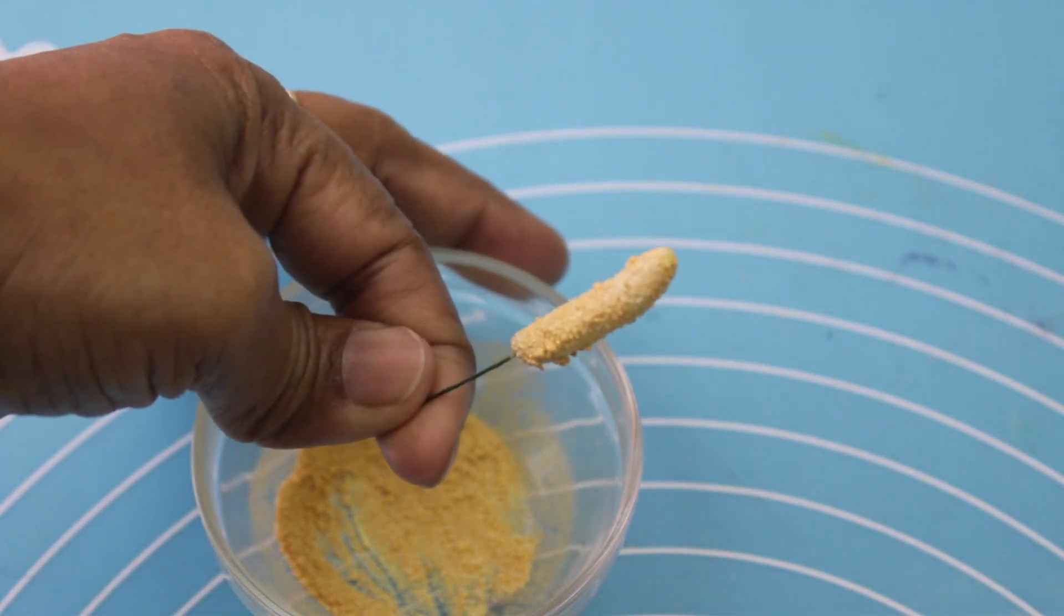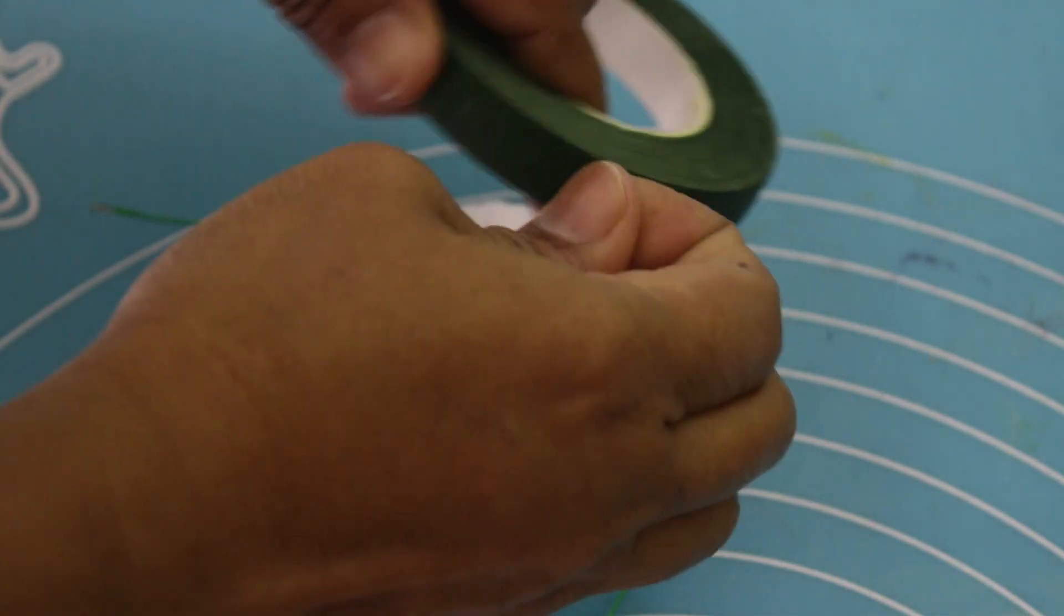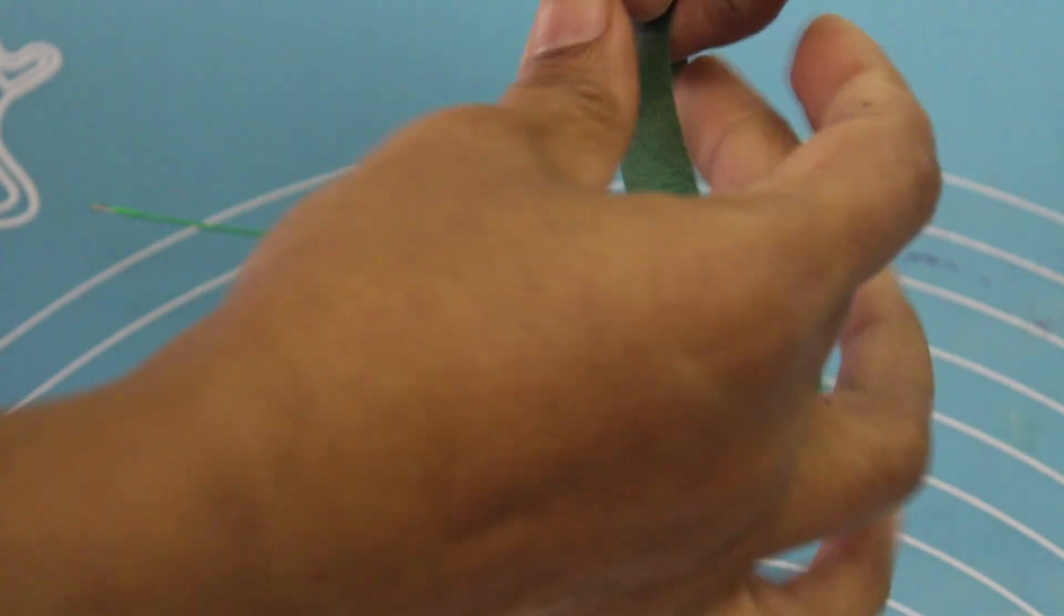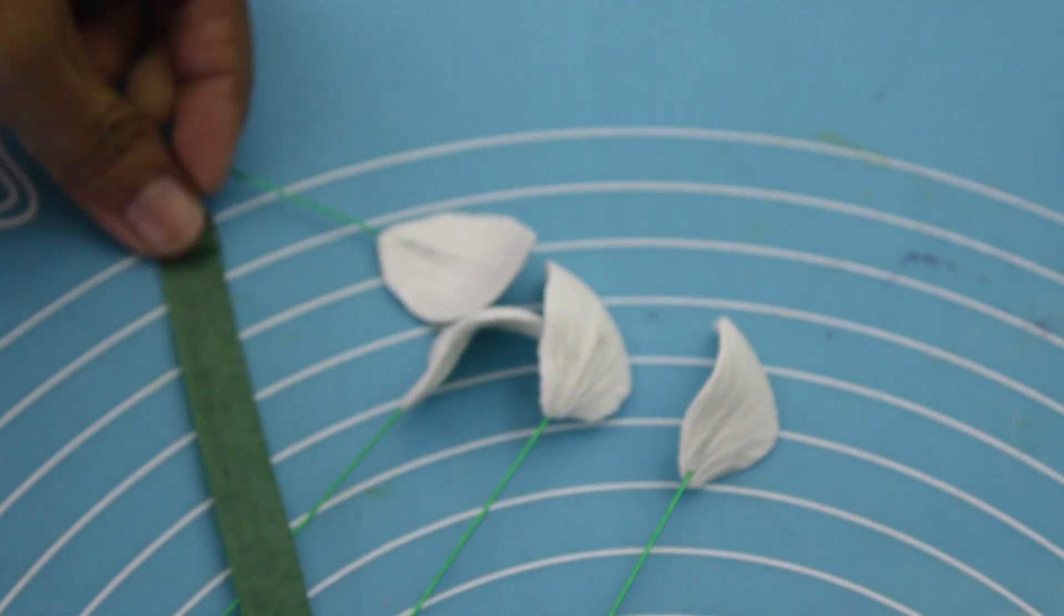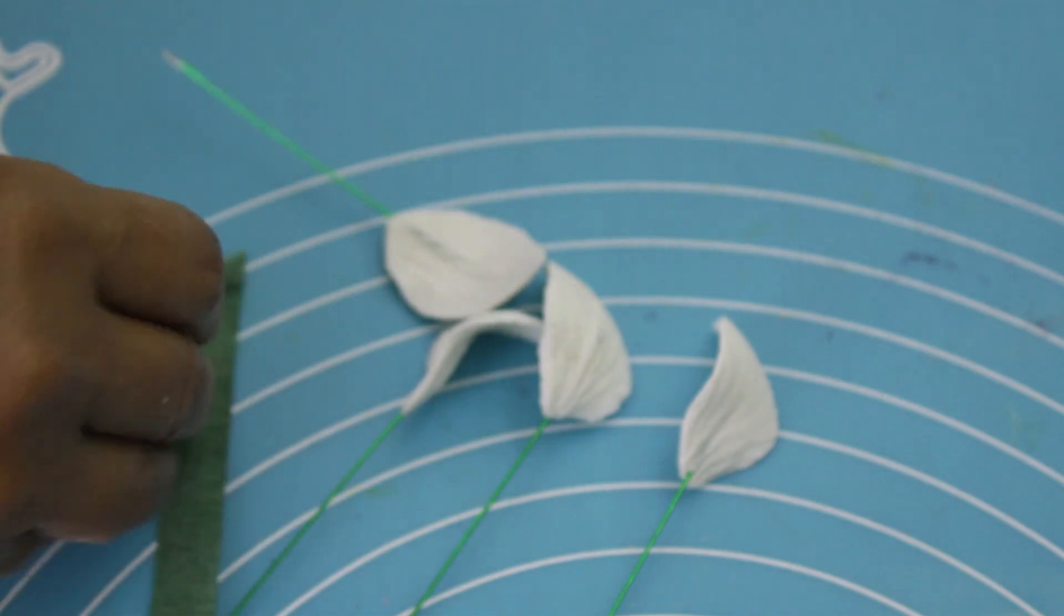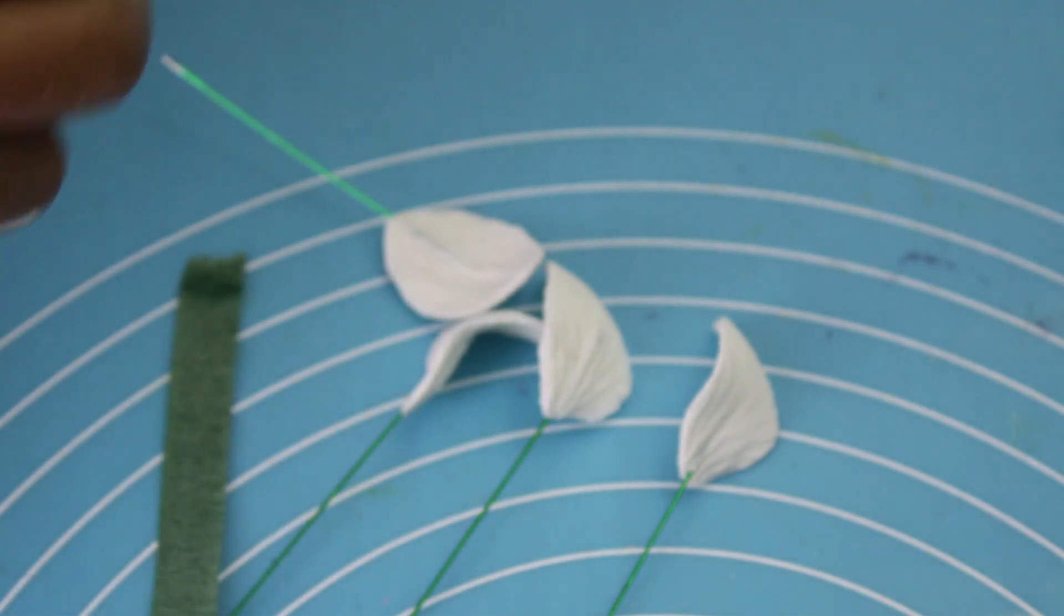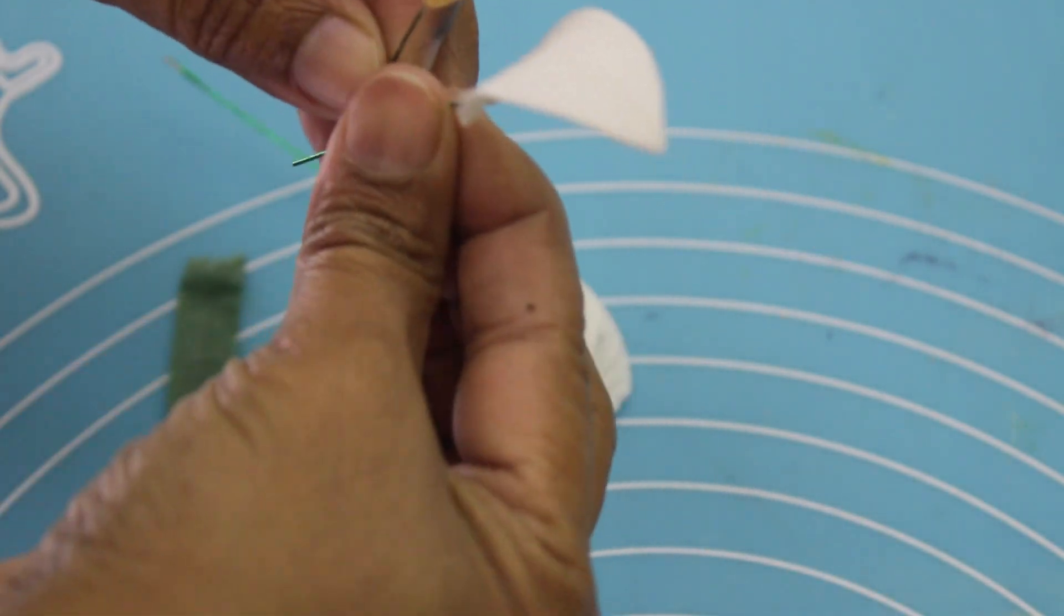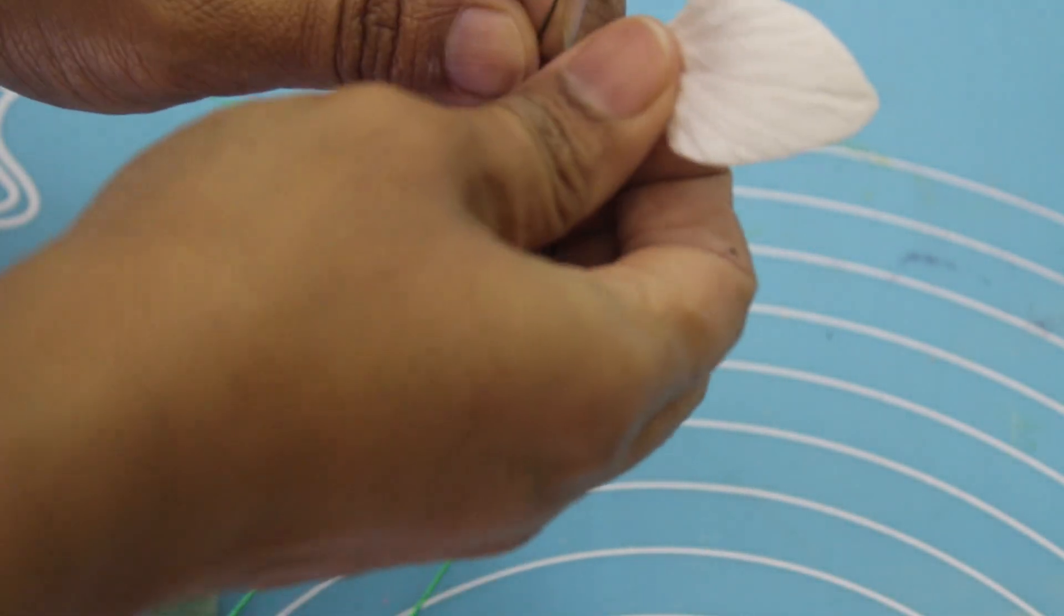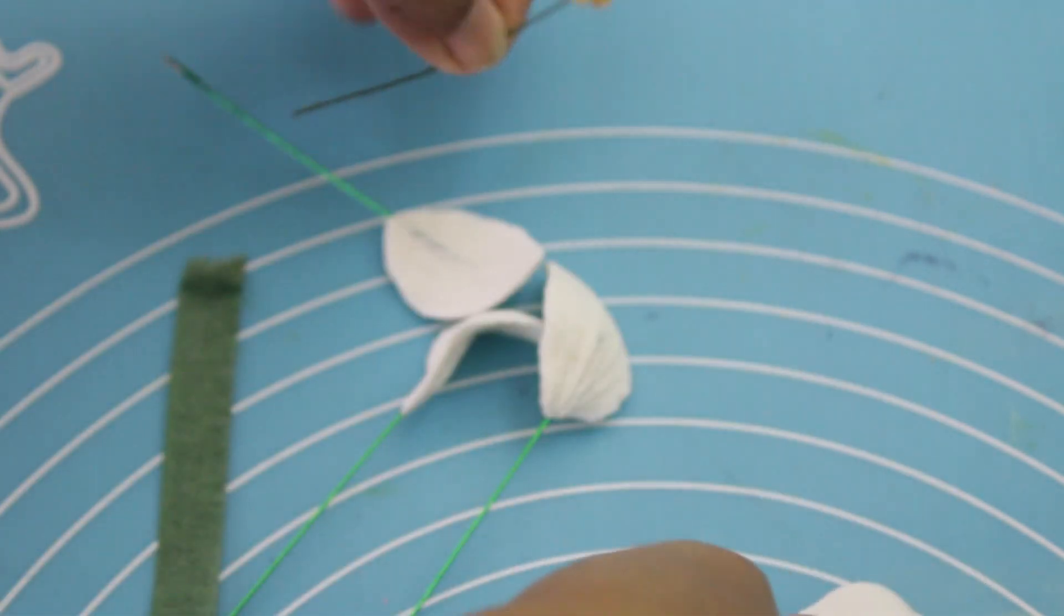That is my gold one. Now using the floral tape. This is the first time making this one. Bend a little bit these ones.